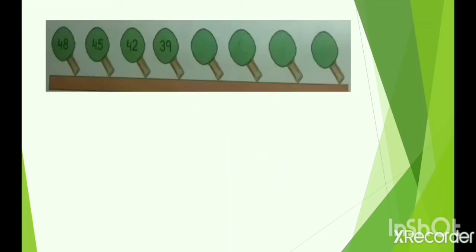Next question: numbers are given on the ice cream sticks — 48, 45, 42, 39. Again the numbers are in decreasing order, from bigger to smaller. The first number is 48, then 45, so we are skipping back two numbers: 47 and 46. Then we skip 44 and 43 and reach 42. In the same way we skip 41 and 40 to reach 39.